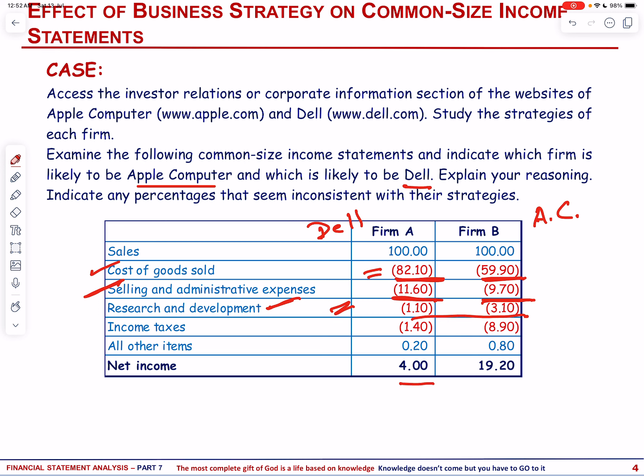The investments in research and development enable Apple to introduce new features, enhance user experiences, and differentiate itself in the competitive consumer electronics market. In contrast, Dell's R&D spending, while significant, may be structured differently to support its business strategy of delivering efficient and customizable solutions to its enterprise and consumer customers. These differences highlight how companies allocate resources based on their strategic priorities and market positions in the technology industry.